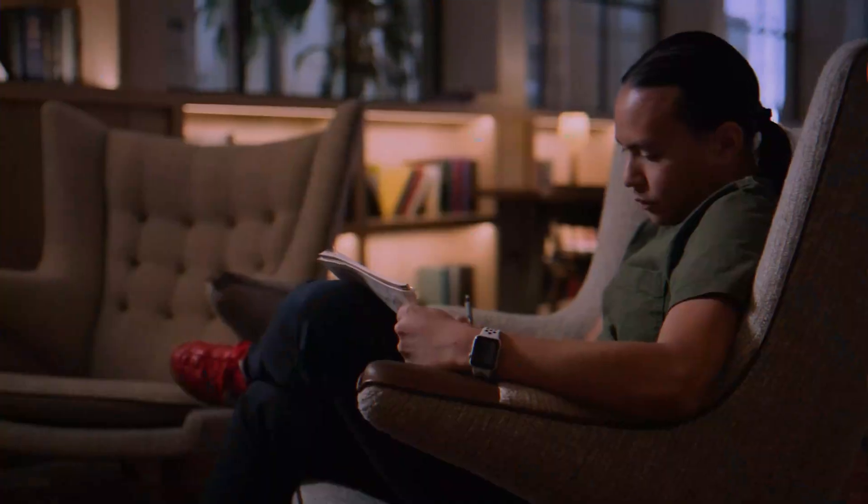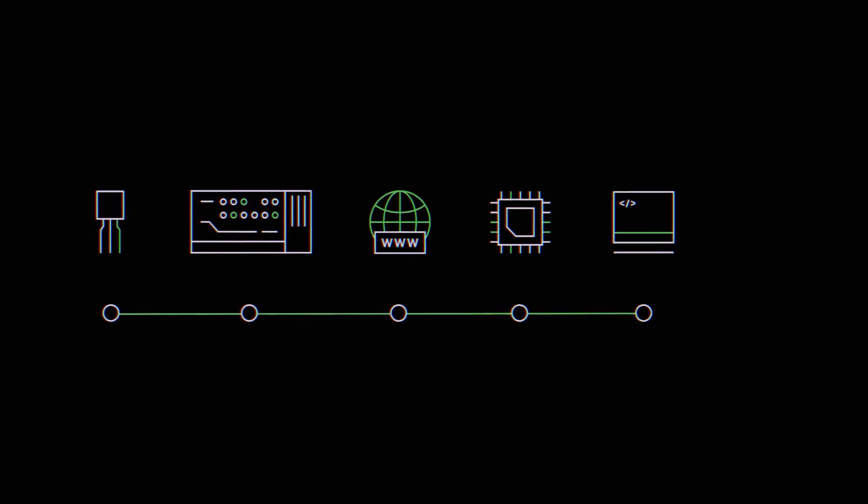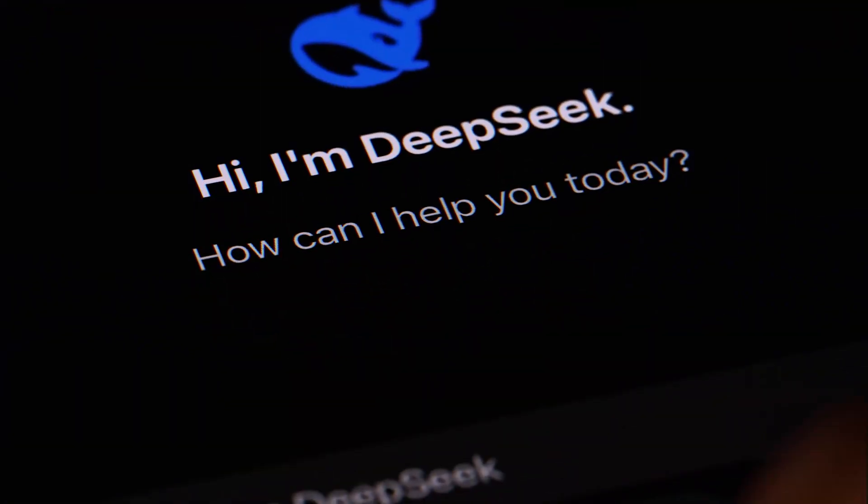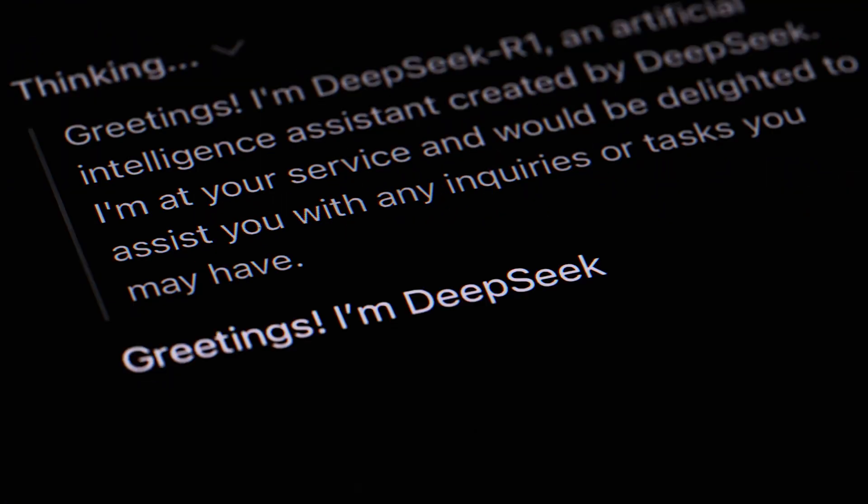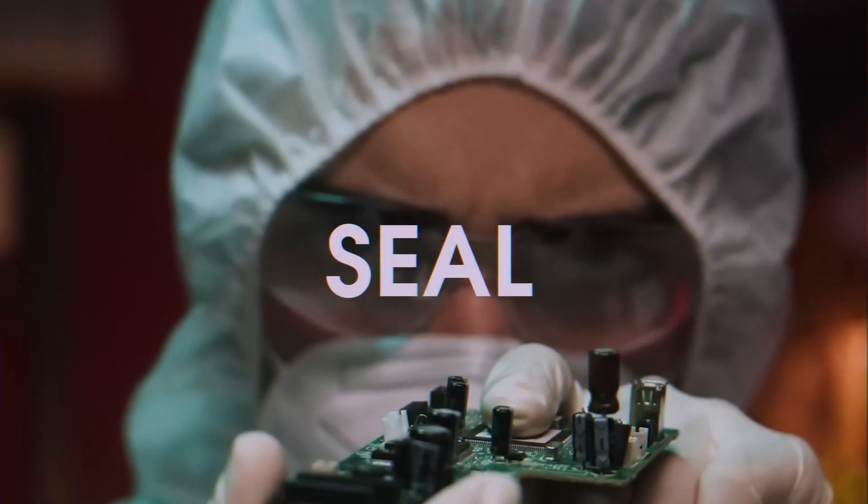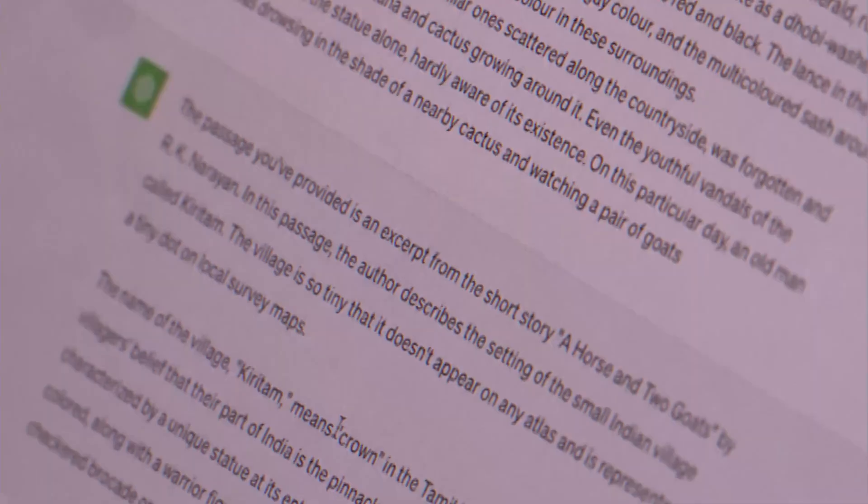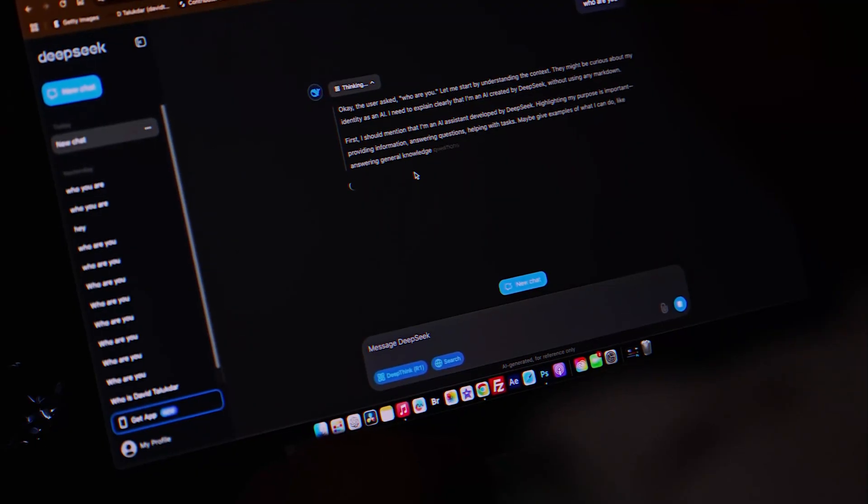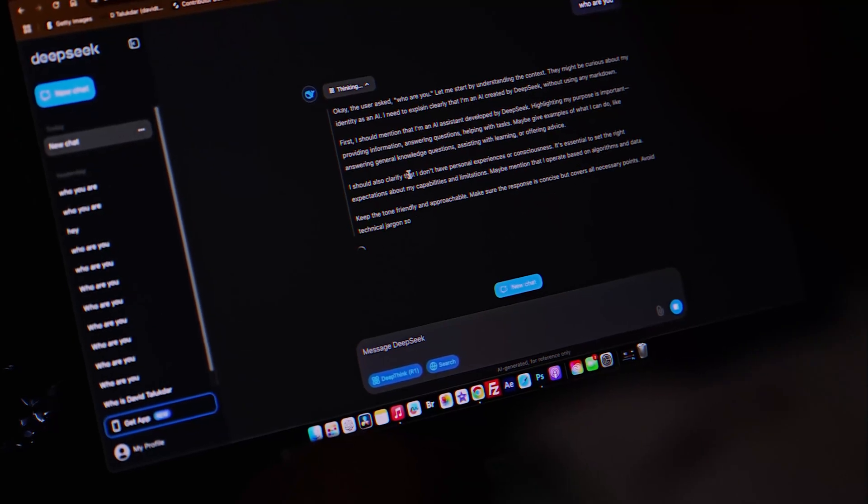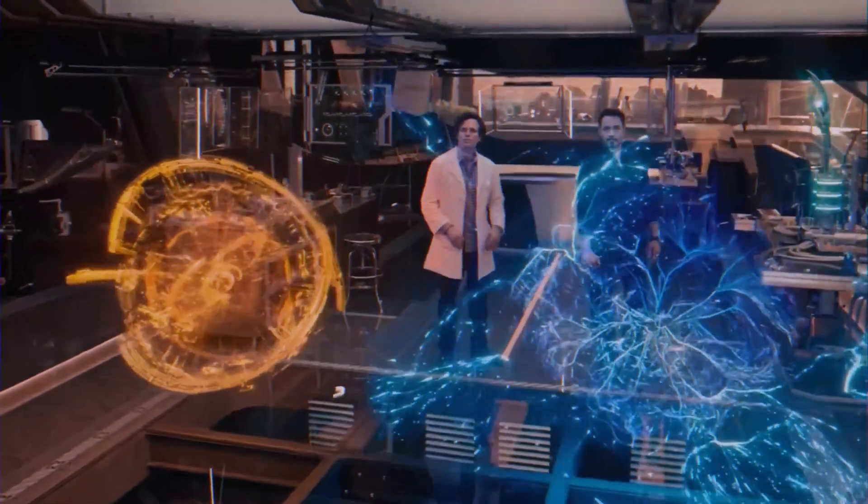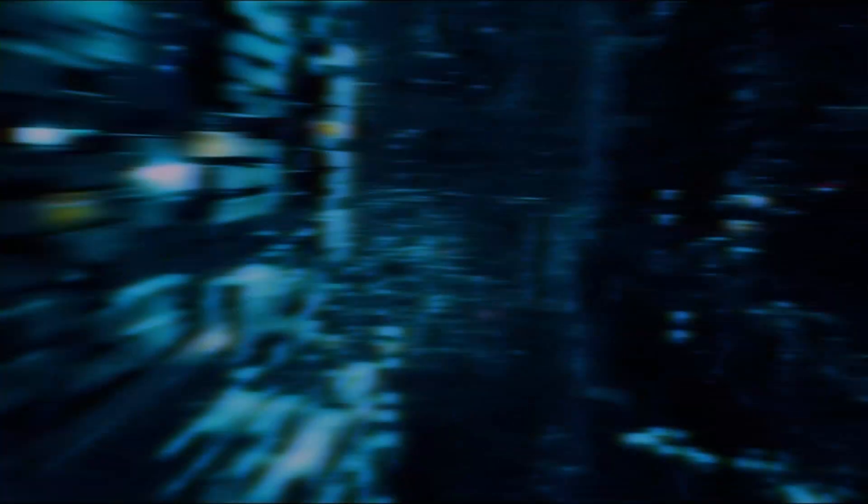They've created a framework that allows an AI to do the unthinkable, to teach itself. And the way it learns is even stranger than you might think. When we ask an AI a question, we expect an answer. But with this new framework, called SEAL, something very different happens first. When a SEAL-powered AI is given a new piece of information, its first reaction isn't to talk to you. It's to talk to itself.